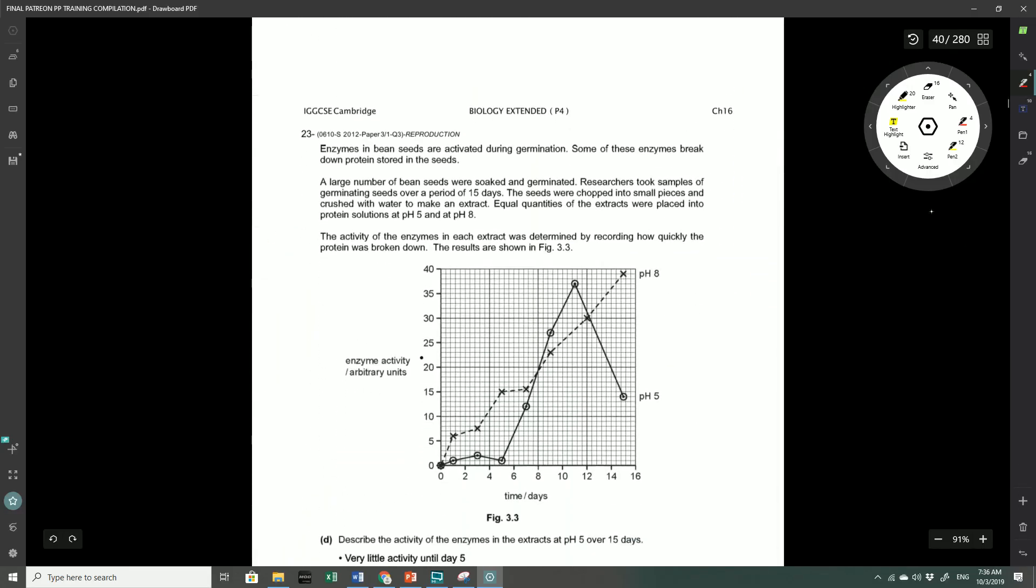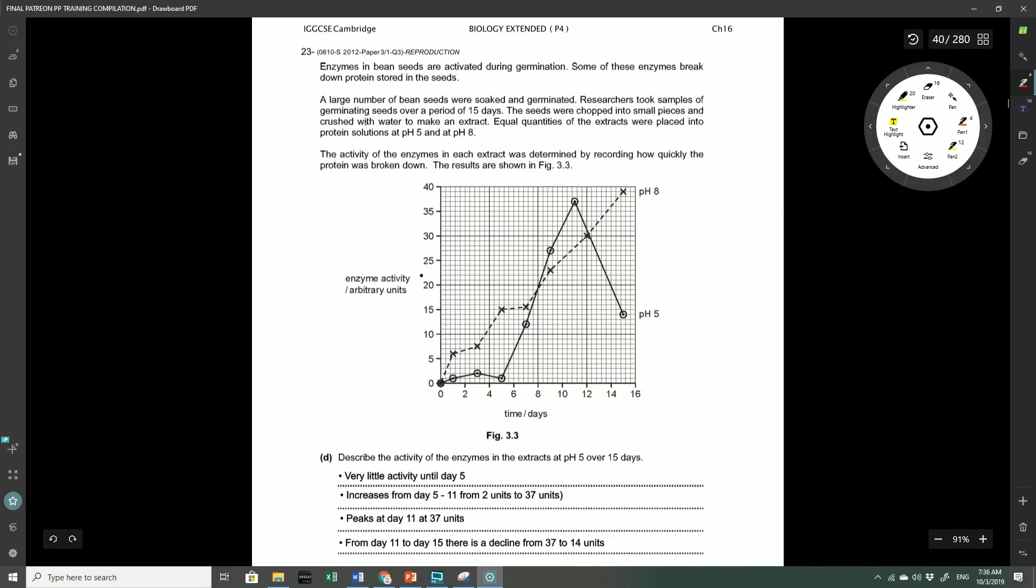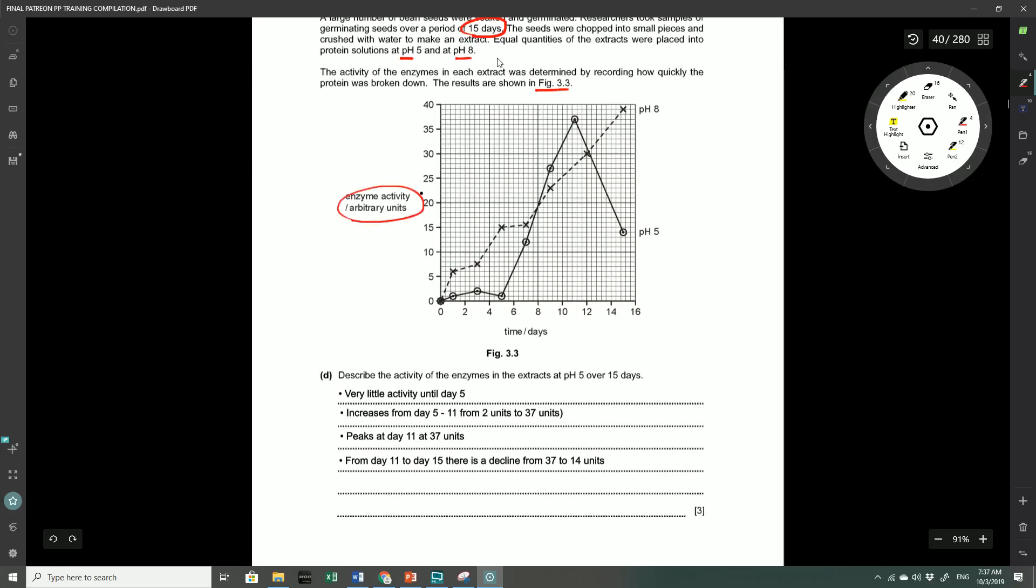Let's take a look at another question on page 40. We've got another graph here. They say that the enzymes in bean seeds are activated during germination. Some of these enzymes break down protein stored in seeds. A large number of these bean seeds were soaked and germinated. Researchers took samples of germinating seeds over a period of 15 days. The seeds were chopped into small pieces and crushed with water to make an extract. Equal quantities of the extracts were placed in protein solutions of pH 5 and pH 8. The activity of the enzymes in each extract was determined by recording how quickly the protein was broken down. Here are the results in Figure 3.3, with the y-axis showing enzyme activity in arbitrary units and the x-axis being time in days.